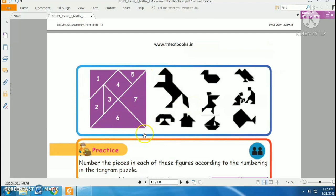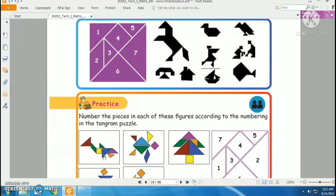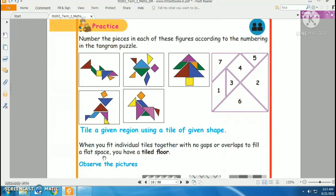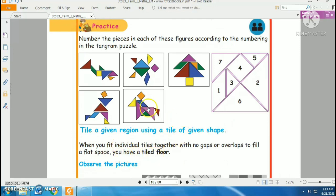You can even see here how to cut tangram of seven pieces. You can cut these seven pieces, arrange it and rearrange it to make different shapes. When you arrange these pieces together with no gaps or overlaps to fill a flat surface, then you will get a tiled floor. See, this is a square. In this square you have arranged all these pieces of the tangram without any gap and overlap, so this square is a tile.